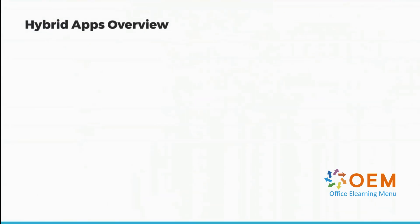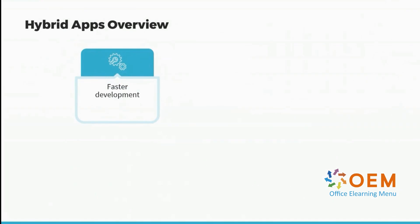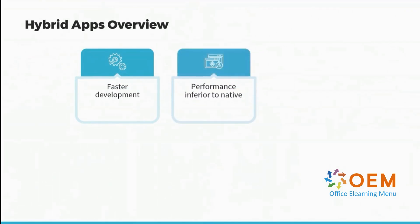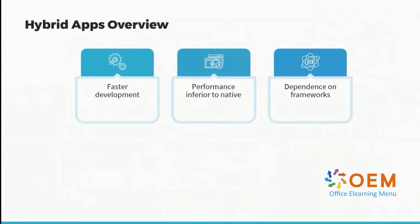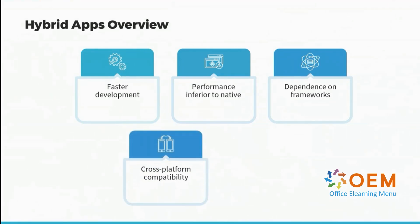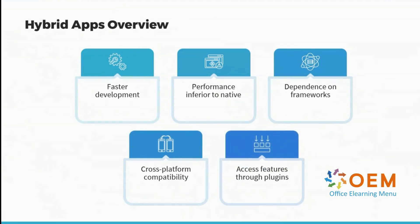Hybrid apps are known for their fast development time. Their performance is lower when compared to native applications. They always depend on a framework and access features through specific plugins, which means the framework dictates how these applications are developed. What's great about them is that they offer cross-platform compatibility, running on multiple platforms and devices. On the negative side, they require plugins to access specific device features.